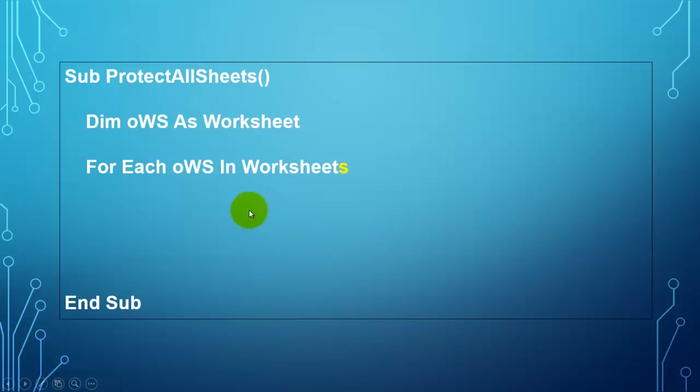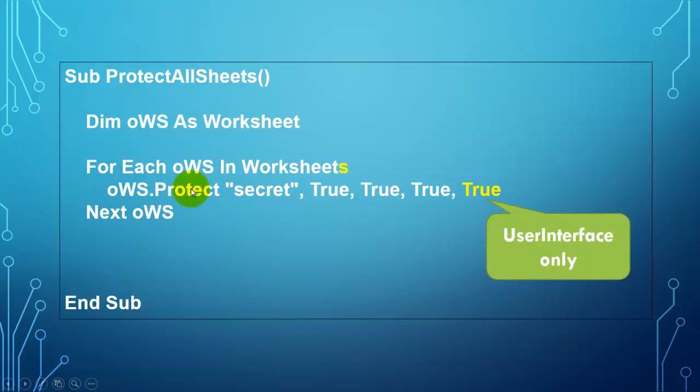For Each oWS in worksheets, there is the collection. We close the loop with Next oWS. And we are going to say to each oWS protect it with a password. Let's say secret. And you set a few variables to true.